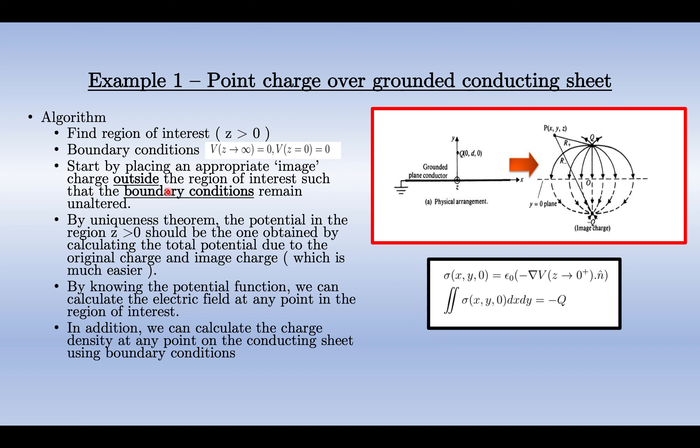Since we know z < 0 is a region which is not in our interest, we can actually start placing appropriate image charges there. We can place -q and the boundary conditions remain the same: z = 0 has potential 0 and the same at z tending to infinity. So whatever potential we get in this case, because of uniqueness theorem, should be the same.